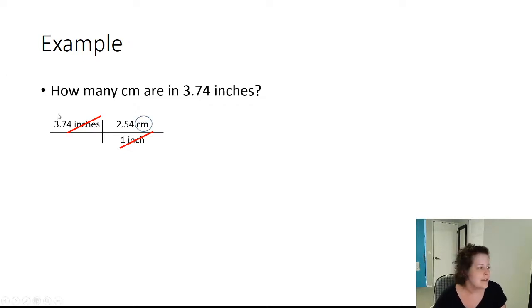Everything on top gets multiplied, everything on bottom gets divided. So in my calculator, I would type in 3.74 times 2.54 divided by 1. Now everybody knows that anything divided by 1 is what it was. So that's how I would do it. What my calculator spits out is 9.4996 centimeters.